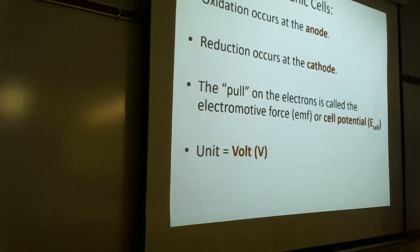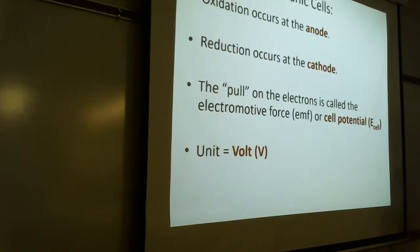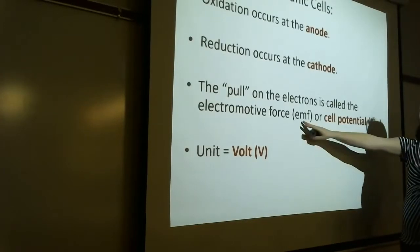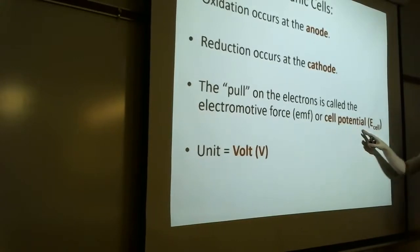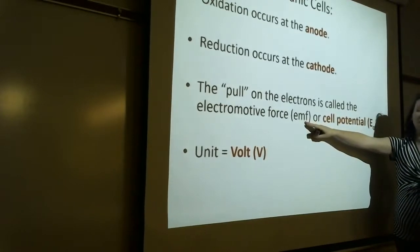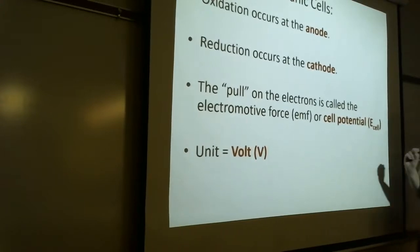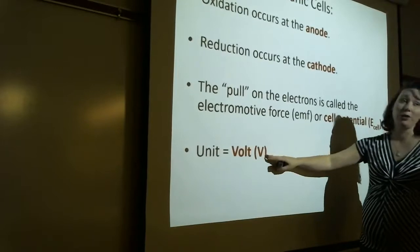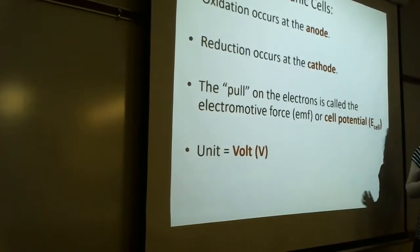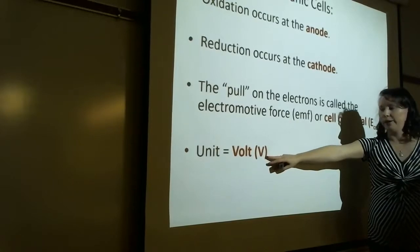Here are some important vocabulary words. Oxidation occurs at a place we call the anode, and reduction occurs at the cathode. The pull of electrons through the wire is called the electromotive force, or EMF, which is also known as the cell potential, E cell. The unit we'll be using is volts — in lab we'll be dealing with millivolts since we're not generating a whole lot of current, but in calculations we'll use volts.